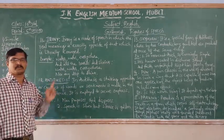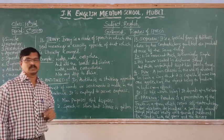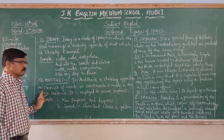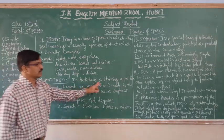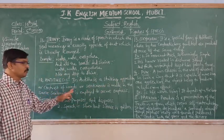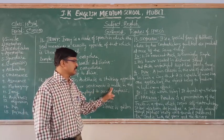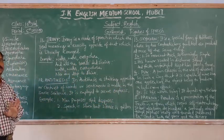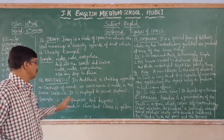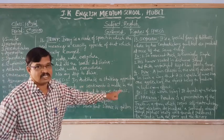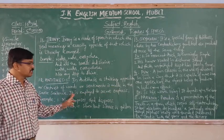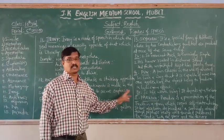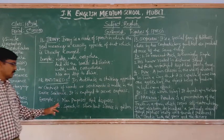Next, the 12th type of figure of speech is antithesis. Antithesis is a striking opposition or contrast of words or sentiments made in the same sentence. It is employed to secure emphasis. Example: 'Man proposes, God disposes.'